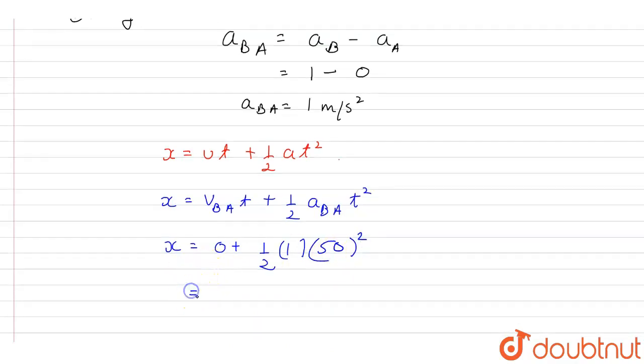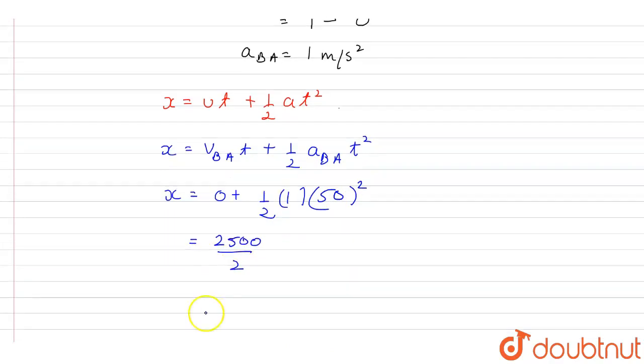Therefore, it will be equal to 2500 divided by 2, so it will be equal to x is equal to 1250 meters.